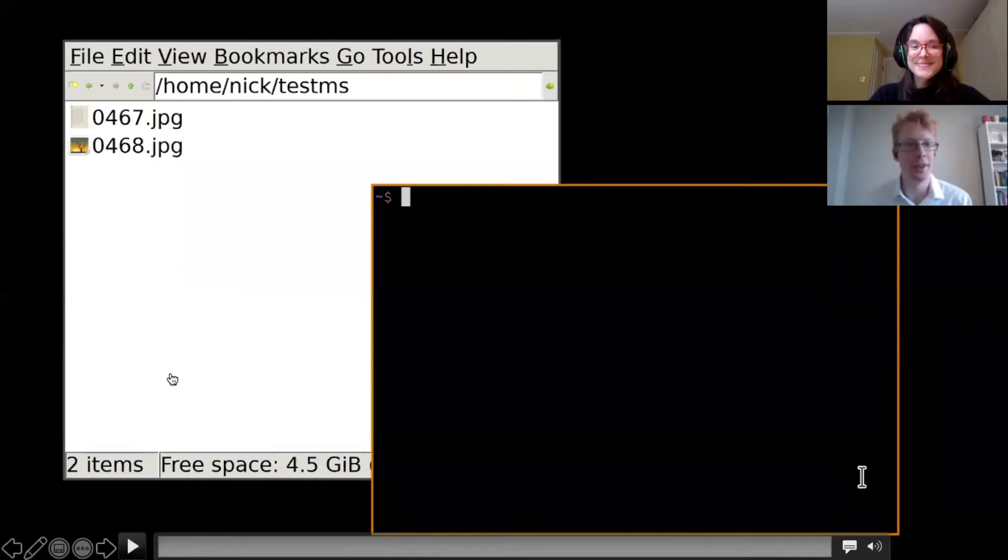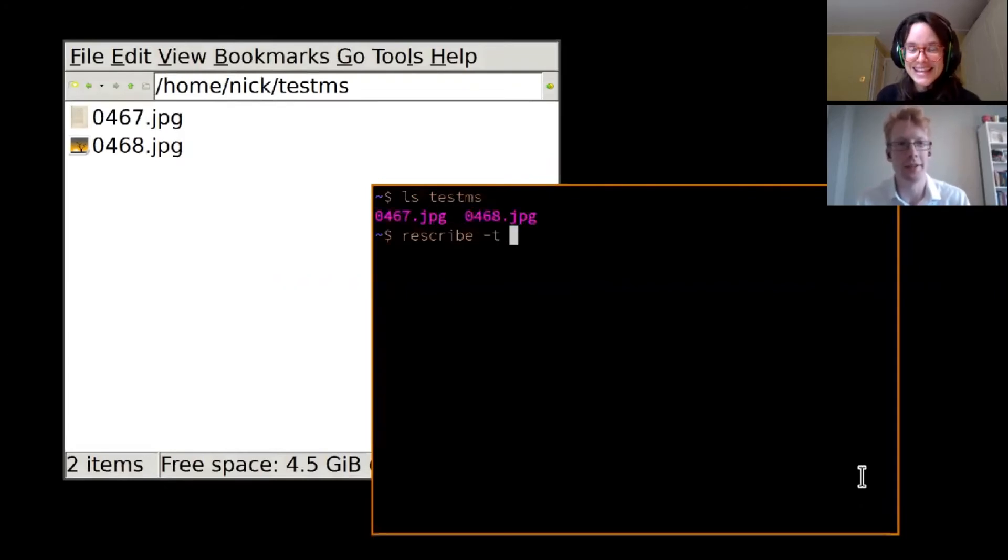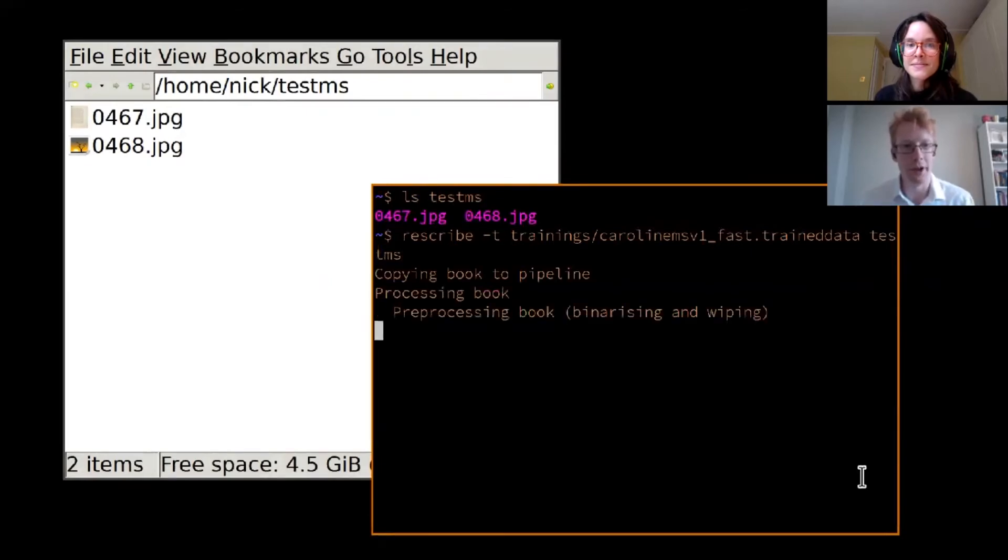Sure. So here I'm going to run the tool, which is called Rescribe, after our company, on a test manuscript, which is just a couple of manuscript pages. You can see the tool where you run it, you call Rescribe and then dash T and then the path to an OCR training, which we're using the Caroline minuscule one we created earlier, which is also freely available. And you pass it the name of the directory.